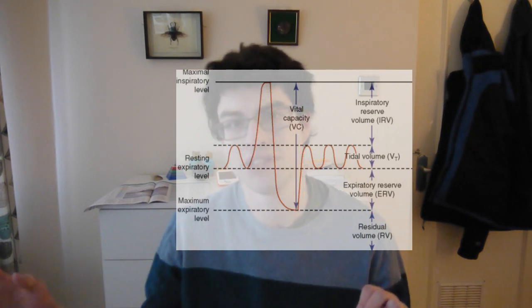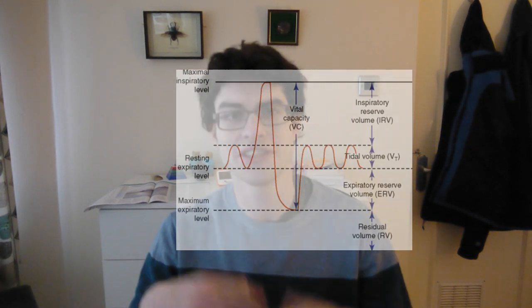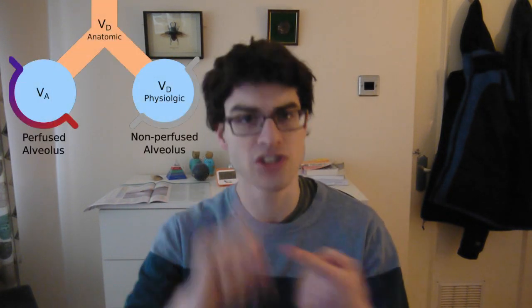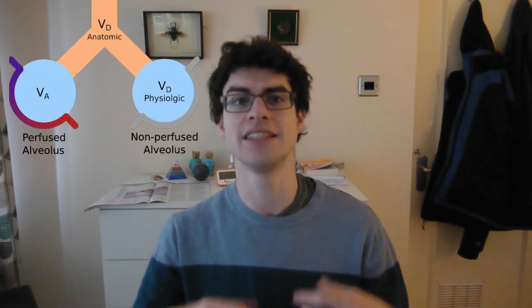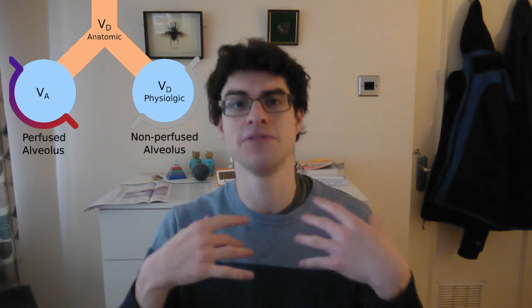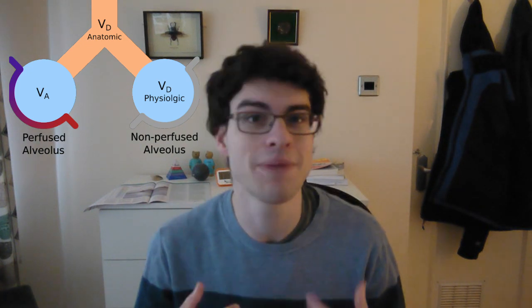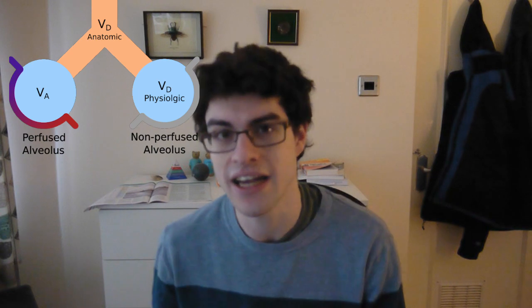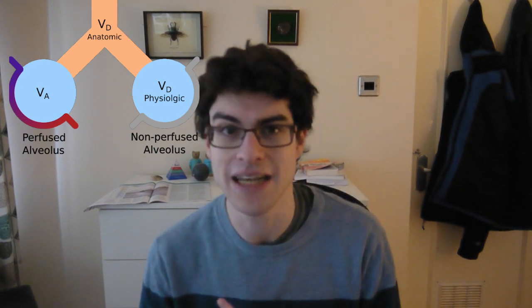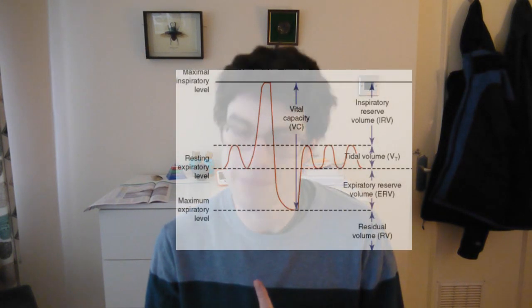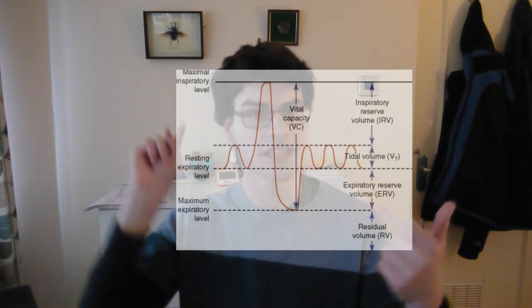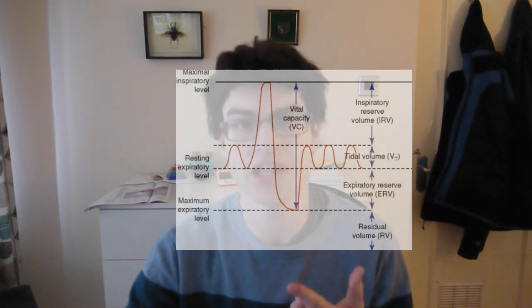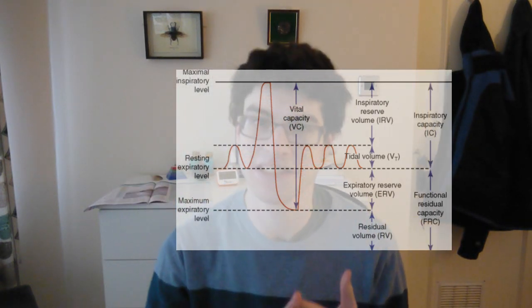Dead space doesn't participate in gas exchange — it's just air that stays there — and it's made out of two parts. The anatomical dead space is the bits of the bronchial tree not participating in gas exchange, i.e. the bronchioles and bronchi. And there's also alveolar dead space, which there isn't very much of — it's basically zone one. Residual volume plus expiratory reserve volume equals the functional residual capacity.